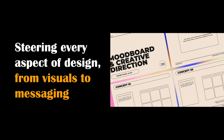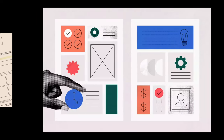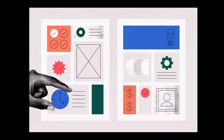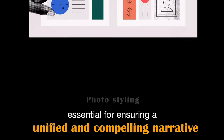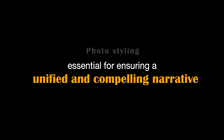Creative direction is the guiding force behind a project's artistic vision, steering every aspect of design from visuals to messaging. Designers use creative direction to create cohesive, on-brand visuals and to make artistic decisions that serve the project's objectives, ensuring that the end result is a captivating and impactful work of art. It is essential for ensuring a unified and compelling narrative as it harmonizes design elements and aligns them with the project's goals.